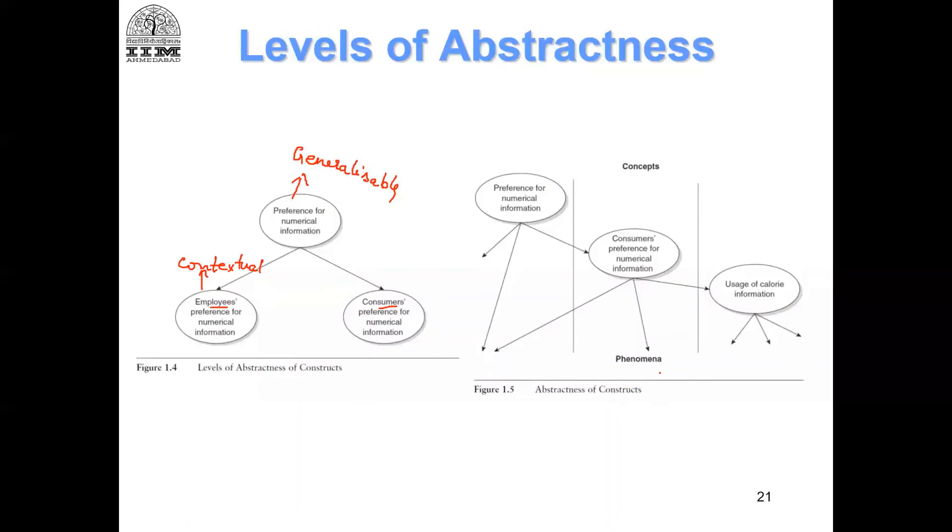So, that is what we are talking about and all these are examples of reflective constructs because you are seeing that the item is the arrows are going from the latent to outside.